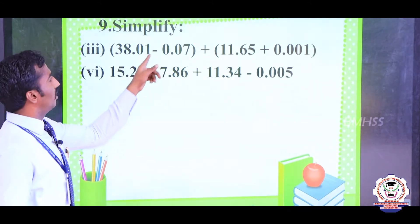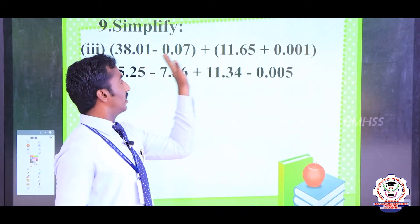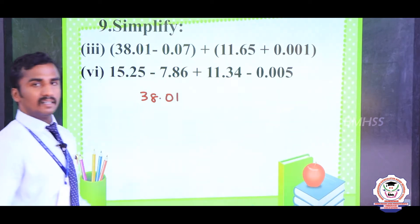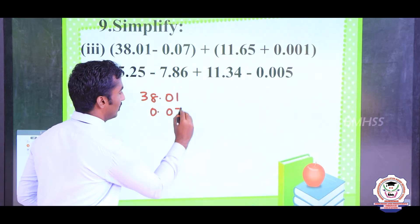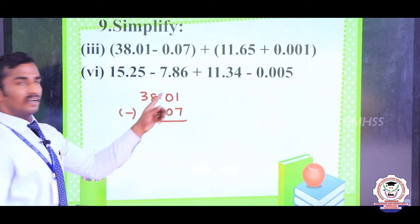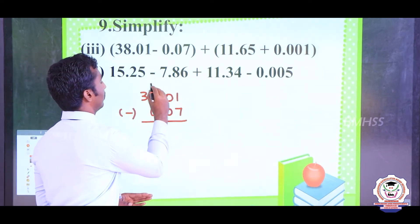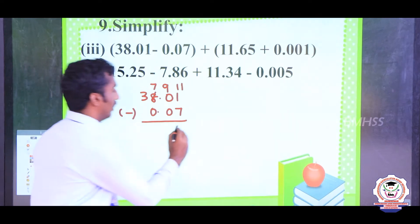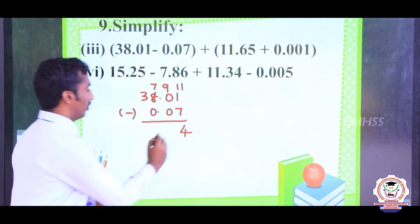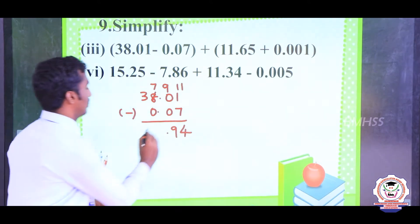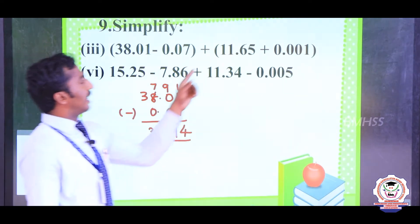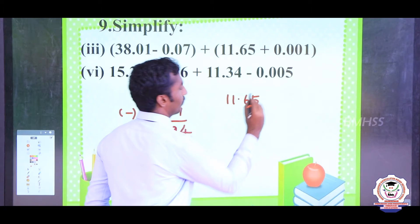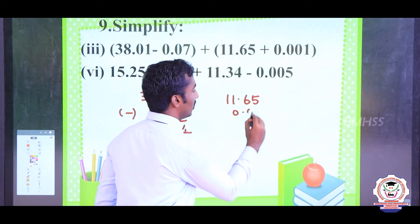So: 38.01 minus 0.07. Here we have subtraction. 1 minus 7 is not possible, so we borrow 1; that becomes 11 minus 7 equals 4. The adjacent digit changes: 9 minus 0 equals 9. Then 7 minus 7 equals 0, giving 3. So 38.01 minus 0.07 equals 37.94. Next, inside the bracket: 11.65 plus 0.001.